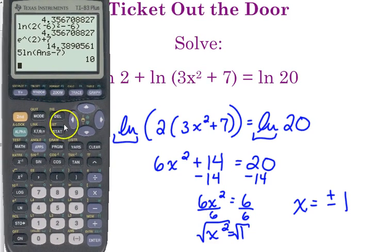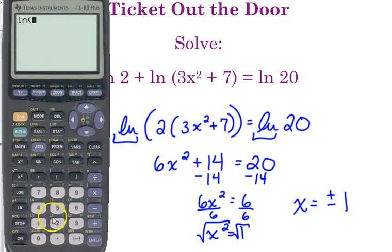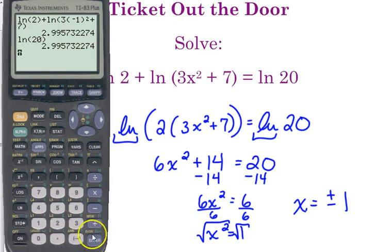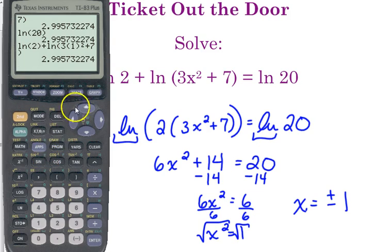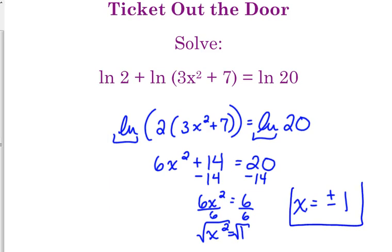I definitely want to check the negative 1 because lots of times that can cause an issue. So, the natural log of 2, make sure you close your parentheses, plus the natural log of 3, negative 1 in parentheses, squared, plus 7. We want to know is that equal to the natural log of 20, and it is. You could also very easily check the natural log of 1. Just get rid of that negative right there, and it also does the same thing. So, plus and minus 1 are our solutions.